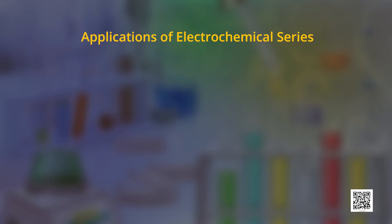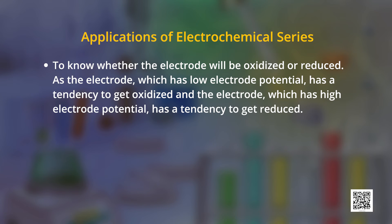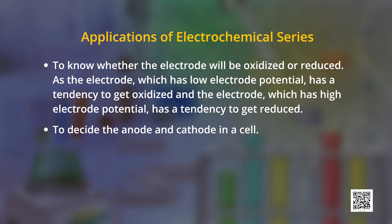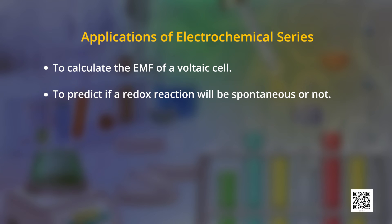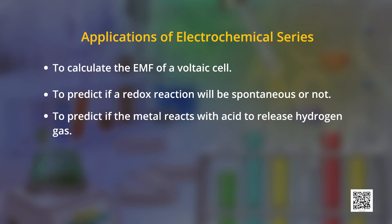This way we will be able to get the electrochemical series by arranging the values of standard reduction potentials in decreasing order. The electrochemical series helps to know whether the electrode will be oxidized or reduced — the electrode which has low electrode potential has a tendency to get oxidized, and the electrode which has high electrode potential has a tendency to get reduced. The electrochemical series is used to decide the anode and cathode in a cell, to calculate the EMF of a voltaic cell, to predict if a redox reaction will be spontaneous or not, and to predict if the metal reacts with acid to release hydrogen gas.